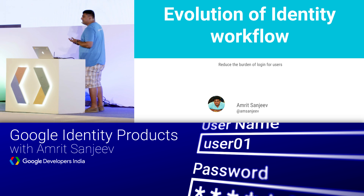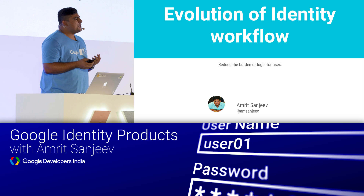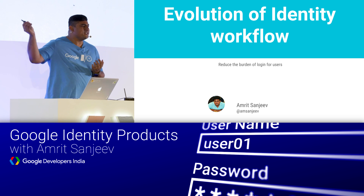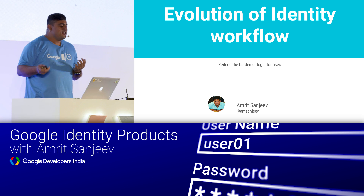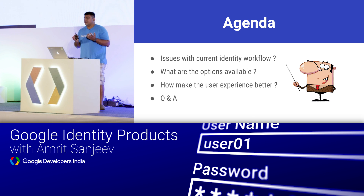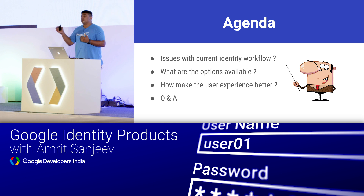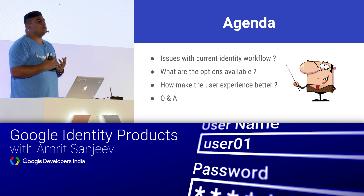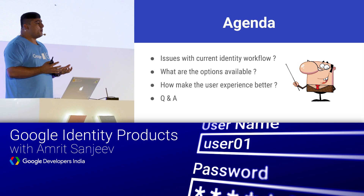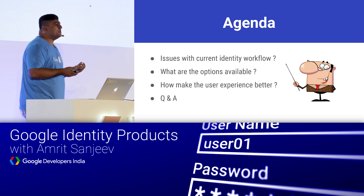Login is not an easy problem to solve. You might look at it like one screen with a user ID and password, but I'll tell you how much complexity is there over the next set of slides. The idea is to call out some of the current issues with workflows on identity, what options we are providing. I'm not talking about external authentication APIs — just what Google's providing for you today and how this can make the experience a little better. If there are questions, I can take them towards the end.